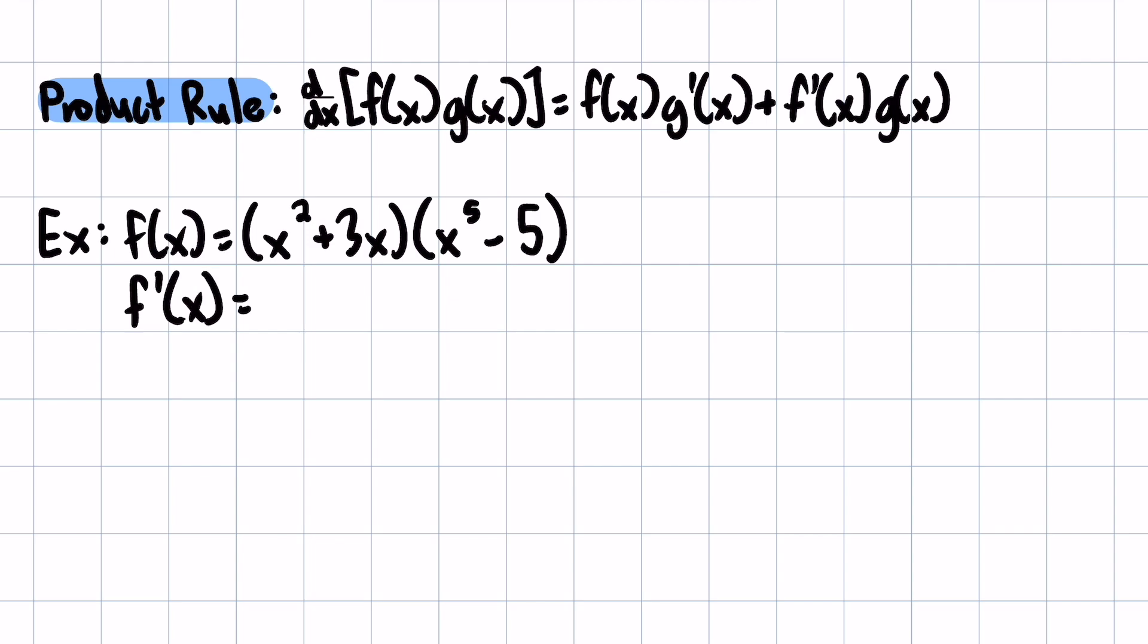So basically, the first thing you do is just... So we split this into two separate functions. The first thing we do is just rewrite the first function. And then we multiply that by the derivative of the second function, which, okay, x to the fifth becomes 5x to the fourth. And then the negative 5 just goes away because it's a constant.